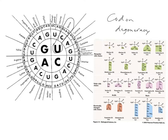Codon degeneracy usually happens in the third nucleotide. The third nucleotide of a codon is where you can have a change and likely still have a silent mutation, or an unaffected protein.